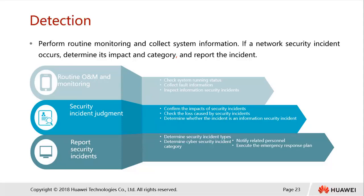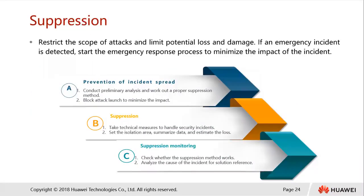The emergency response team handles suspension — restricting the scope of attacks and limiting potential loss and damage. If an emergency incident is detected, start the emergency response process to minimize its impact. Actions taken during suspension include prevention of incident spread: we conduct preliminary analysis and work out proper suspension methods to isolate the damage from spreading to other systems. Next, we block attack launches to minimize impact.